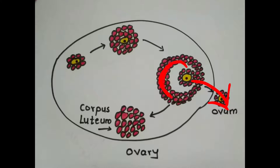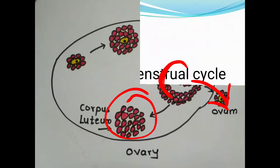The ruptured follicular tissue forms a corpus luteum inside the ovary. Simultaneously, inside the uterus, a parallel process is also going on — the ovary is forming the egg while the uterus is forming the endometrium. Both the ovary and uterus are preparing for the process of fertilization at the same time.